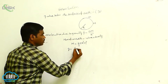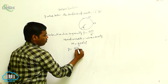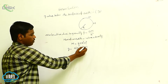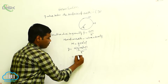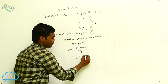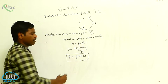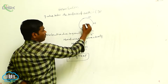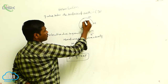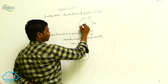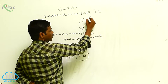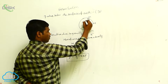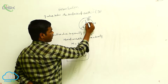Substituting, g = G × (4/3)πr³ρ / r^2, which simplifies to g = (4/3)πrGρ. This is the acceleration due to gravity on the surface of the earth expressed in terms of density. Now, if we go below the surface to depth d, the distance from the object to the center is r minus d.